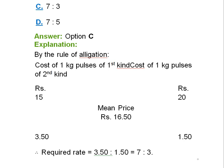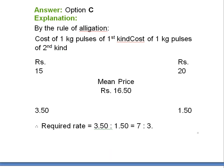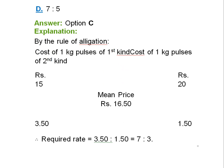By the rule of allegation, cost of one kilogram pulses of first kind, cost of one kilogram pulses of second kind. Mean price will be middle: 15, 20, 3.50, 1.50. The required ratio is 3.50 to 1.50, that is 7:3. Answer option C.